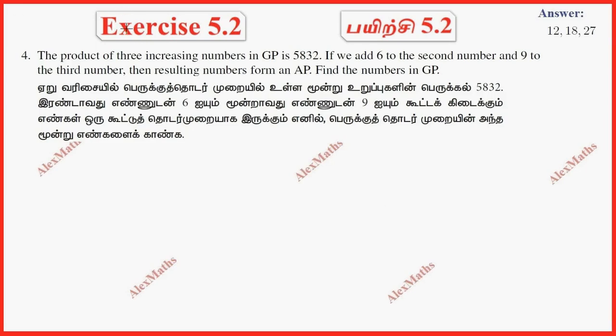Hi students, this is Alex here. Exercise 5.2, question number 4. The product of 3 increasing numbers in GP is 5832.